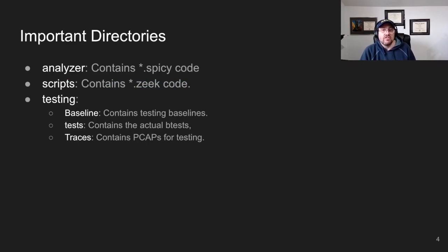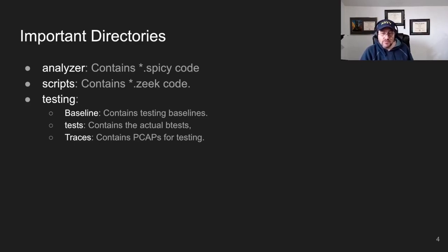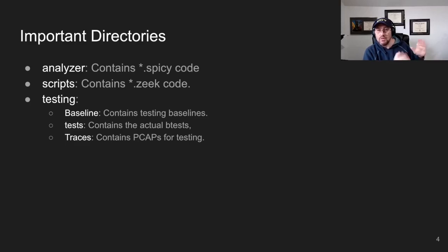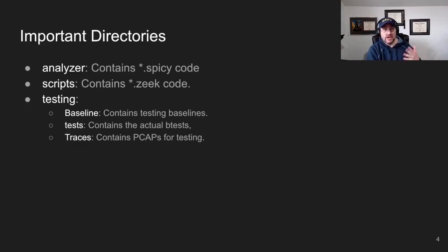Let's talk about some important directories created by the zkg create command. The first is the analyzer directory, which contains the Spicy code. Caveat: in previous versions of zkg create, scripts and analyzer content were placed together in the analyzer directory. In the latest versions there's a separate scripts directory for the Zeek code. The analyzer directory should have all the Spicy code; in newer versions the Zeek scripts live in the scripts directory.